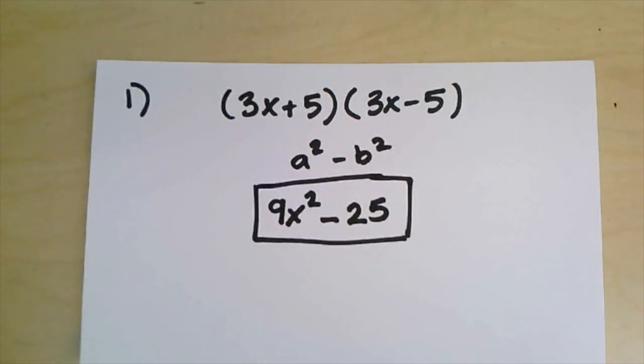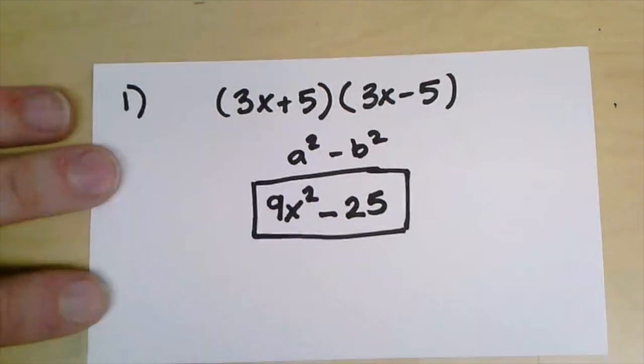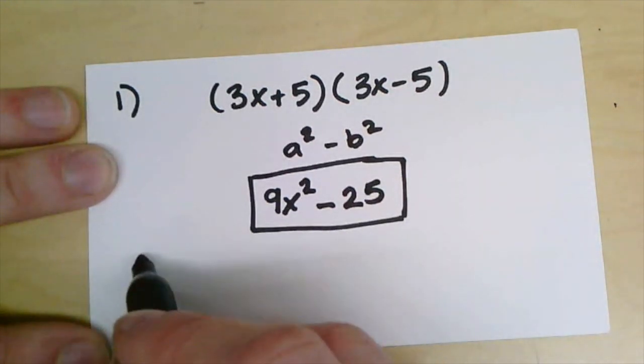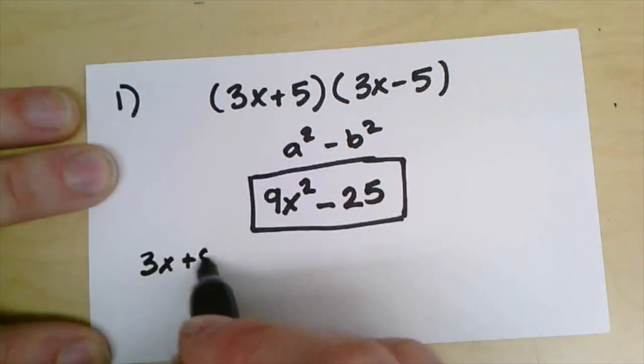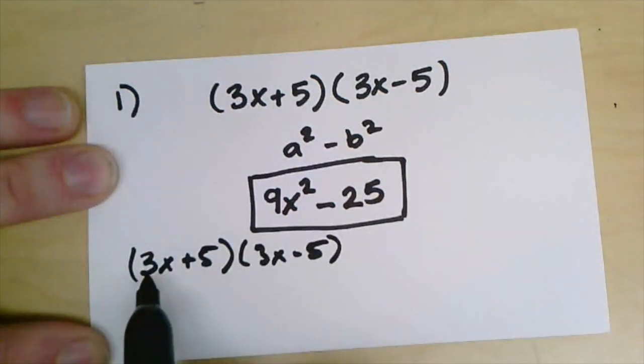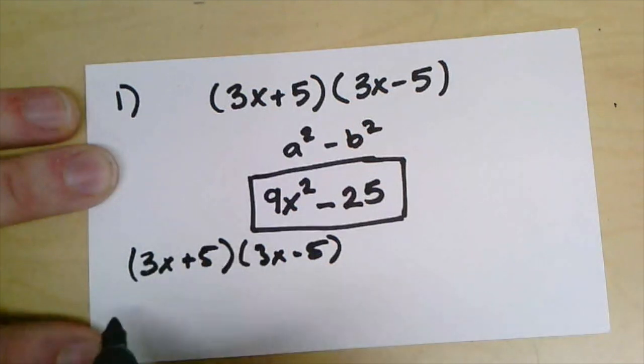Now if you're unsure that you used the pattern correctly, you can always double check by using the box method or the FOIL method. So we'll double check it with the FOIL method. If we have 3x plus 5 and 3x minus 5, if we want to FOIL it out, we do the first terms, that's 3x times 3x which is 9x squared.